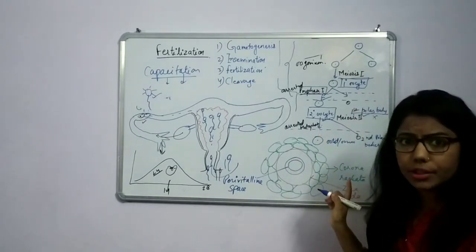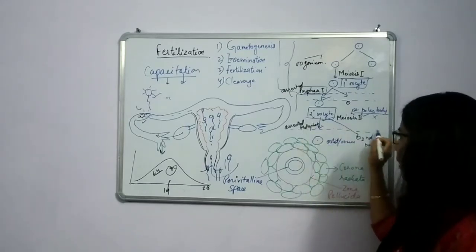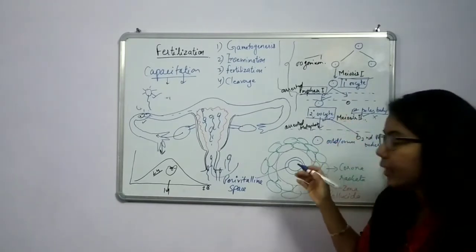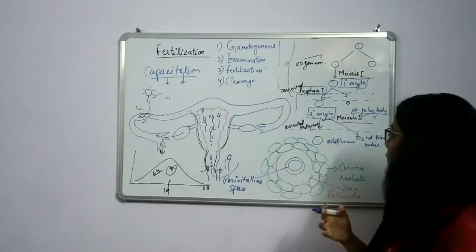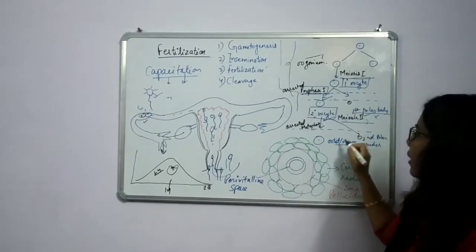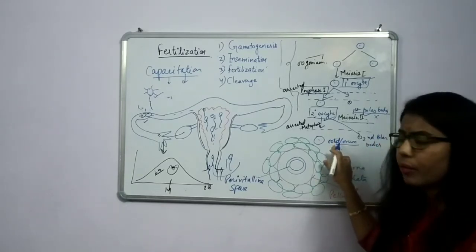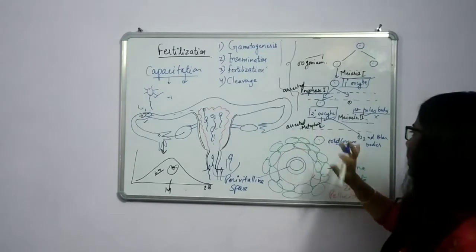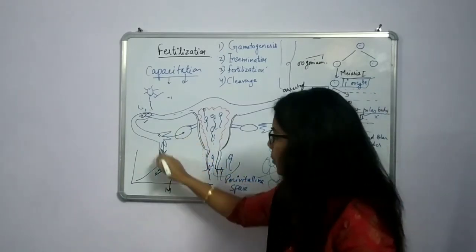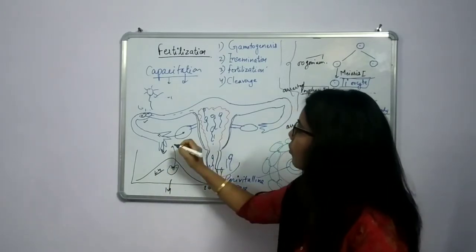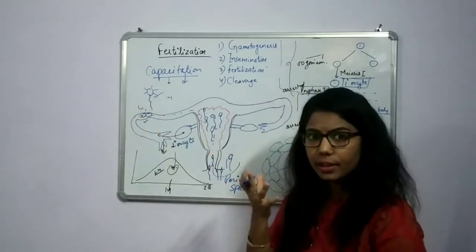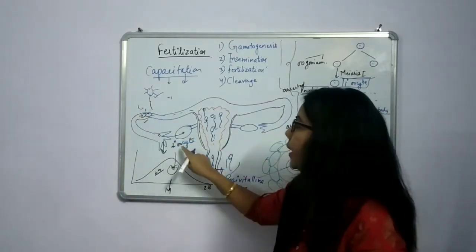If there is no fertilization, the secondary oocyte remains in an arrested stage at metaphase of meiosis II. After the secondary oocyte, there would be some more division due to meiosis II forming the ovum, but this will only complete when there is fusion of male and female gametes. If there is no fertilization, it stays arrested at metaphase II. The Graafian follicle rupturing releases the secondary oocyte — it is not an ovum yet. It becomes the ovum only when it reaches the ampullar region and fertilizes with a sperm.